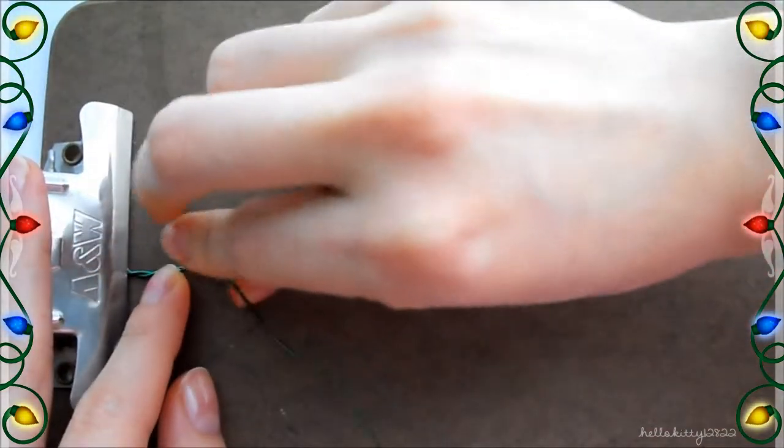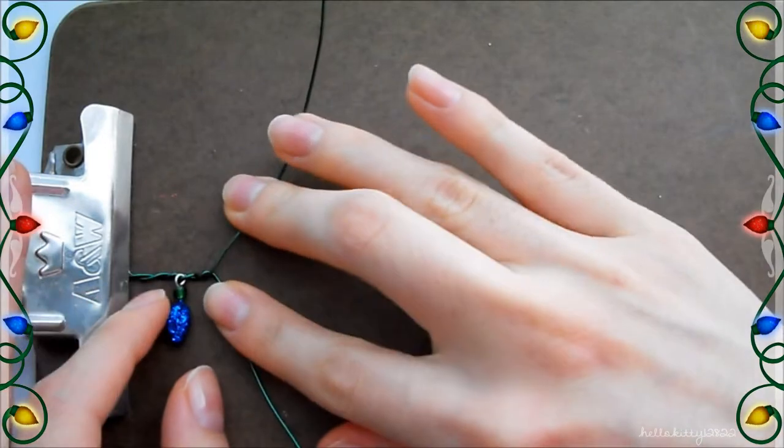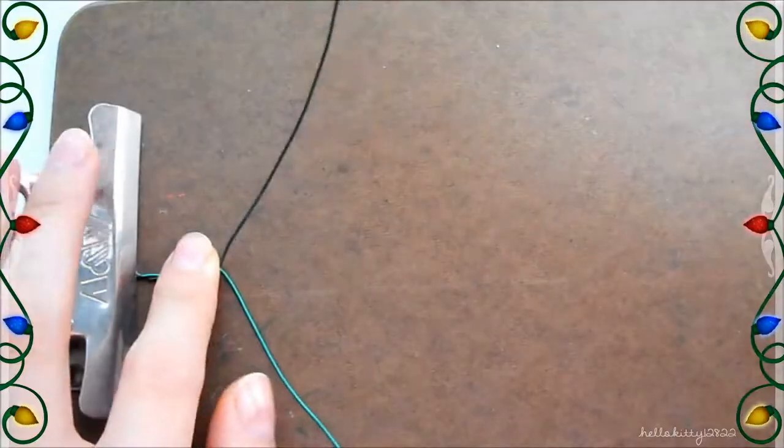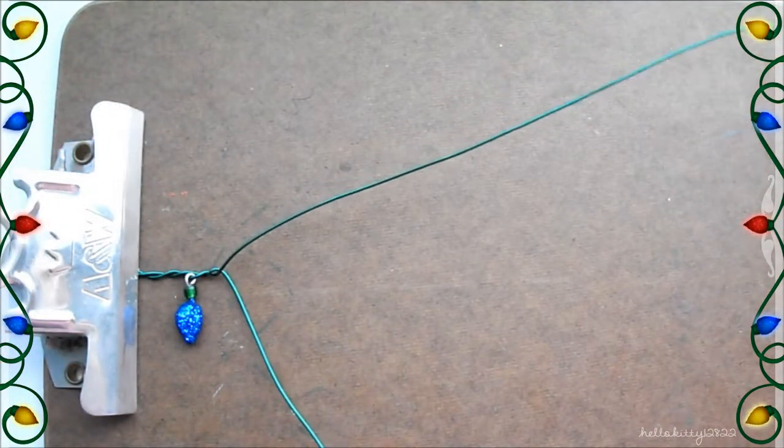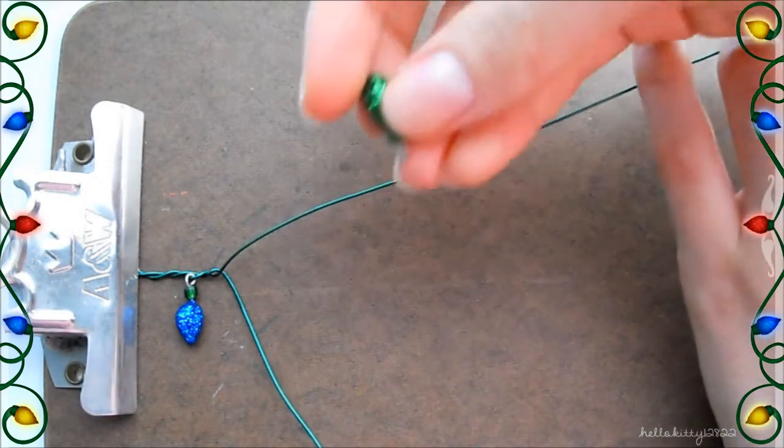And repeat the process on the top part of the wire. So it's going to be a pattern of sliding a light bulb on the bottom wire, twisting, then sliding one on the top wire, twisting, repeat.